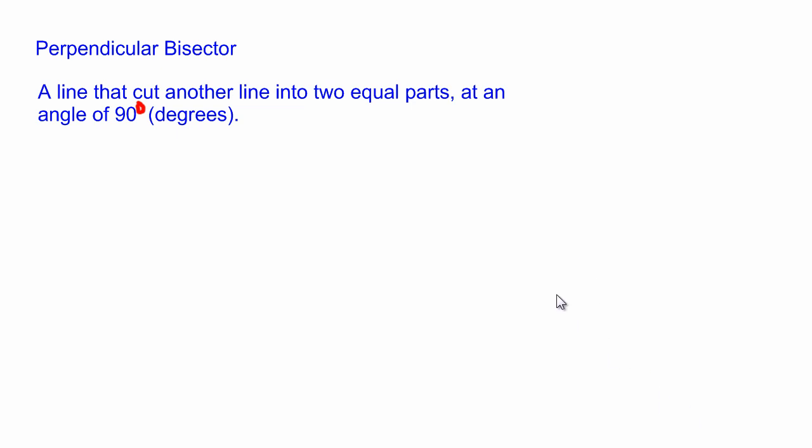In this lesson we are going to be looking at the term perpendicular bisector. Now a perpendicular bisector is a line that cuts another line into two equal parts, and it cuts that line at an angle of 90 degrees.